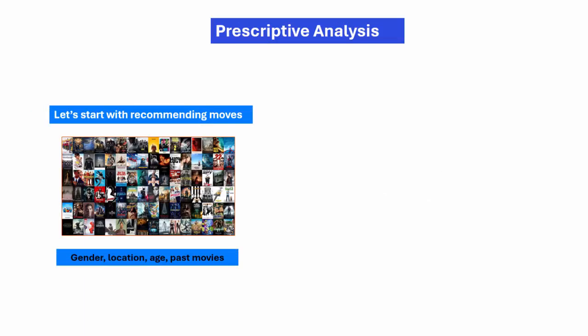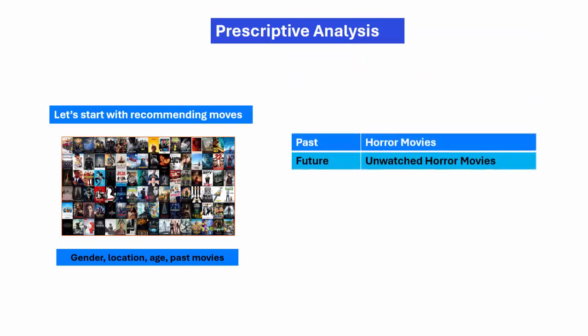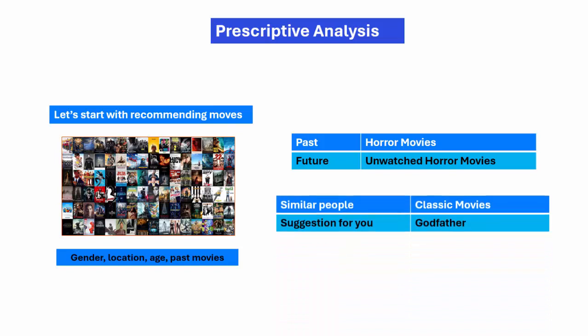For prescriptive analysis — recommending movies. Using gender, location, age, and past movies watched: a person has watched horror movies, but looking at similar demographic people who watch classic movies, the suggestion might be The Godfather. This is how recommendation engines work — it is prescriptive analysis using artificial intelligence. Thanks.